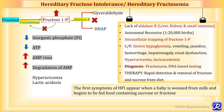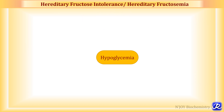Fructose 1-phosphate also inhibits fructokinase by feedback inhibition, leading to increased fructose concentration in blood — that's why the condition is also called hereditary fructosemia. In hereditary fructose intolerance, the decreased ATP concentration — because inorganic phosphate is trapped as fructose 1-phosphate — leads to decreased rate of gluconeogenesis. This affects protein synthesis and clotting factor synthesis, which is why patients also present with hemorrhage.